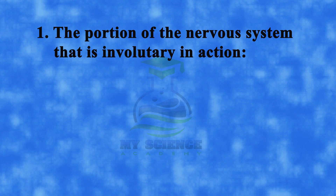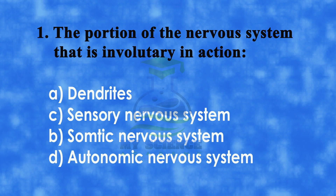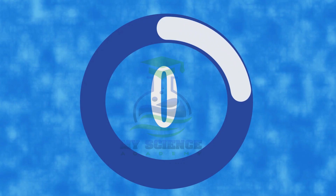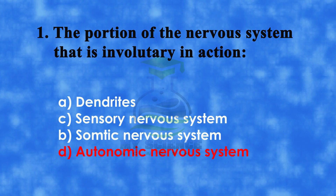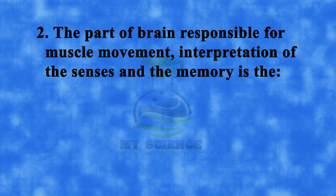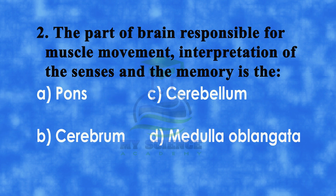Number 1: The portion of the nervous system that is involuntary in action. A: dendrites, B: somatic nervous system, C: sensory nervous system, D: autonomic nervous system. And correct answer is D: autonomic nervous system.